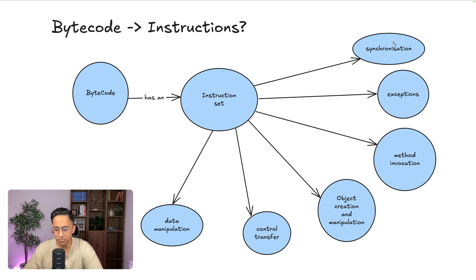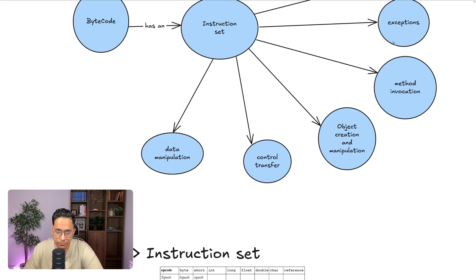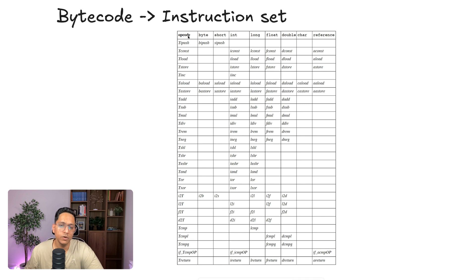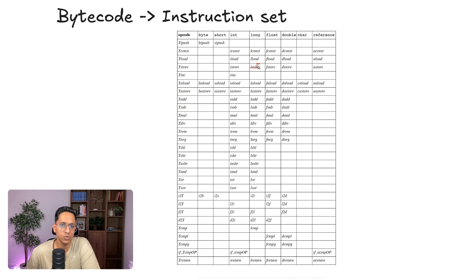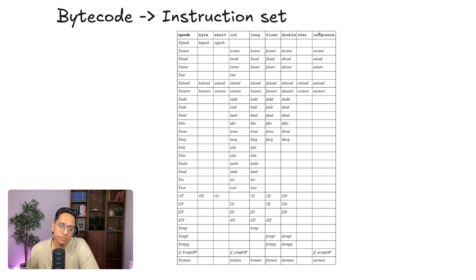These are the high-level classes of instructions that your bytecode can represent. Looking at the instruction set, there's an opcode for each instruction, and for each data type, there's a separate instruction. The first letter represents the data type — for example, 'iConst' means it is working on an integer type. 'lconst' and 'lstore' deal with long values, and 'astore' deals with a reference — similar to a pointer that points to a memory location or object. So these are the data types — primitive ones and others — that the instruction set supports.